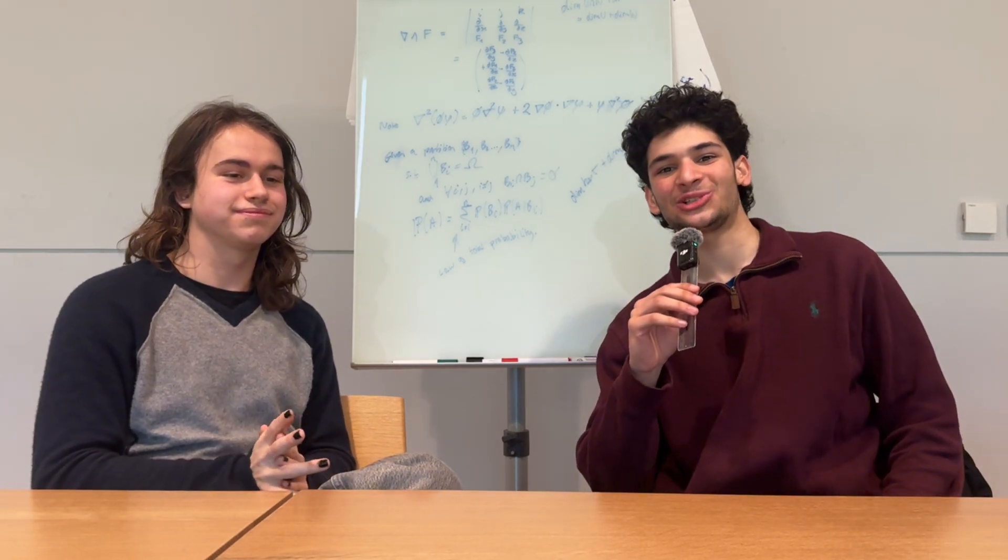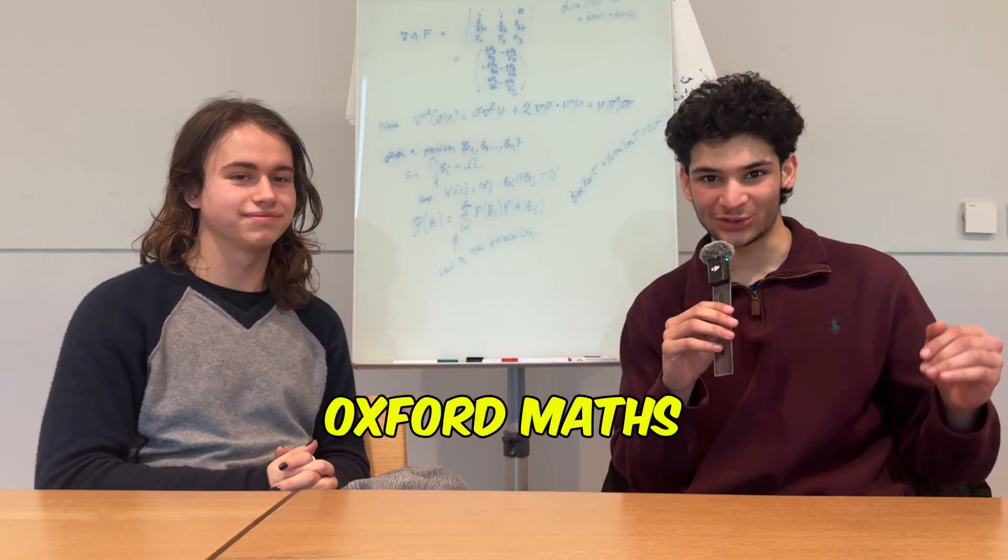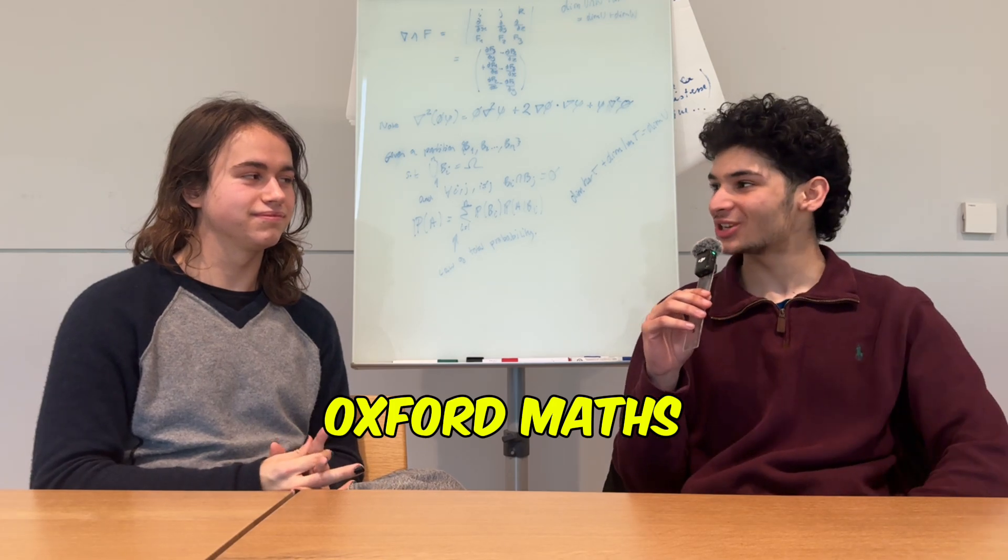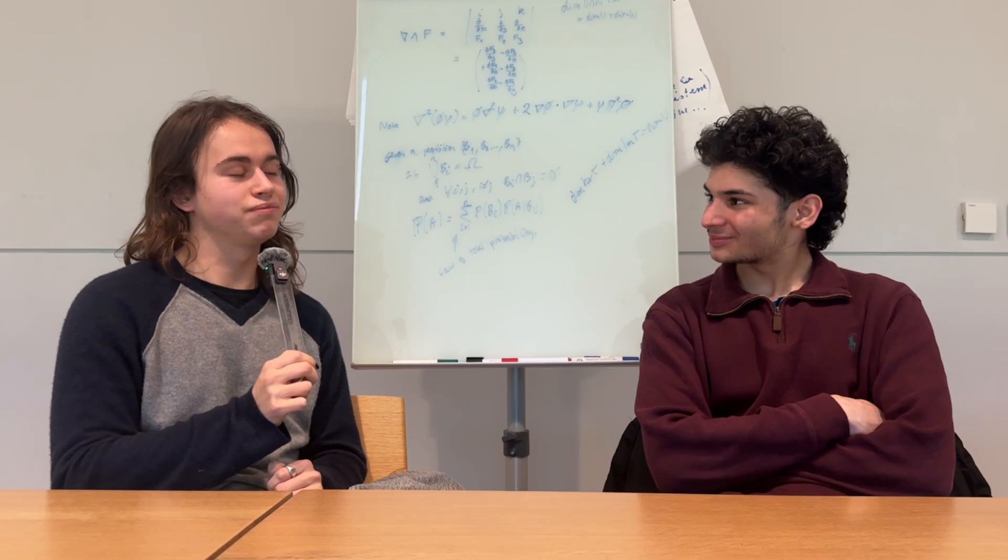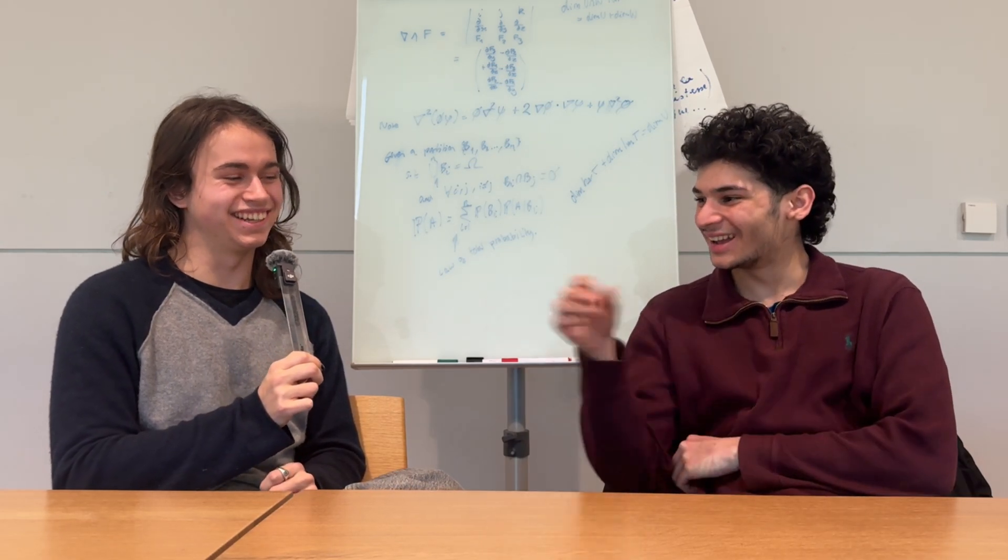Hi, I'm Danny, also known as GCSE Potential, and this is how to get into Oxford for maths. So today I'm here with Joe. Would you like to introduce yourself? Hi, my name's Joe. I'm a first year math student at Worcester College, Oxford. And yeah, I'm happy to talk about how to get in.